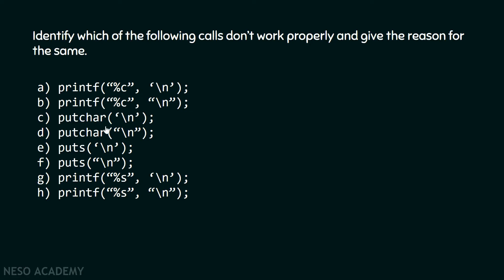What about this putchar function? This putchar function expects a character and what we are passing to it is a character. The functionality of putchar is that it puts a character on the screen, so it is expecting a character and we are passing a character — hence it will work properly. But the next putchar function won't work properly because it expects a character but what we are passing to it is a string.